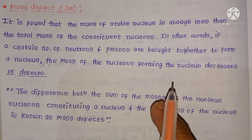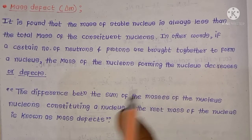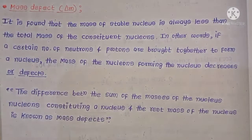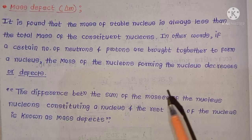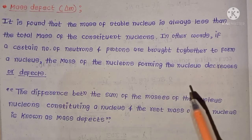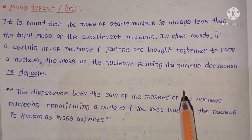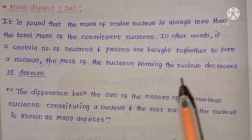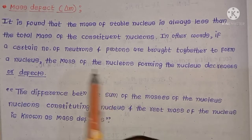The mass defect concept is based upon the nucleus. Mass defect is the difference between the total mass of the nucleons and the rest mass of the nucleus. So mass defect is the difference between the total mass of the nucleons and the rest mass of the nucleus.